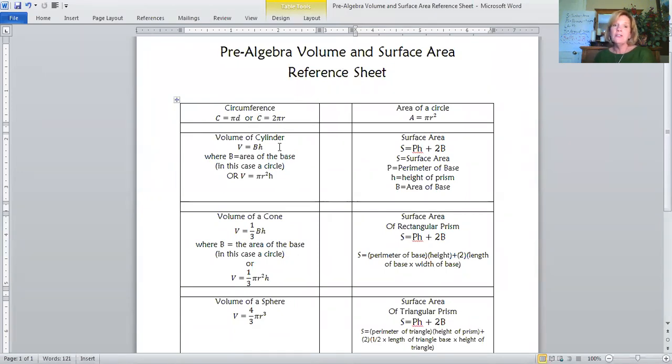So volume of the cylinder, we said volume equals big B times H, where big B is the area of the base. And for a cylinder, the base is a circle. And so volume is equal to pi r squared times H, where the height of H is the height of the cylinder. Volume of a cone, V equals one-third big B times H, where again, big B is the area of the base. So one-third times pi r squared times H, the height of the cone. Volume of a sphere, four-thirds pi r cubed. Be sure and cube the radius there.